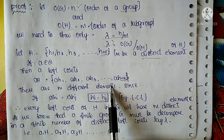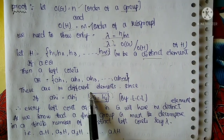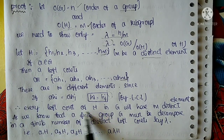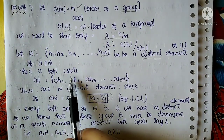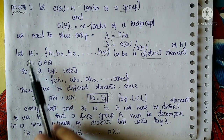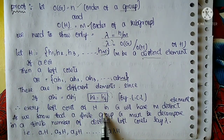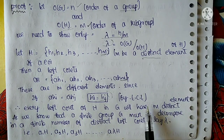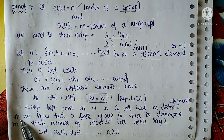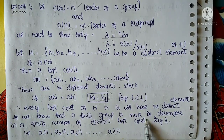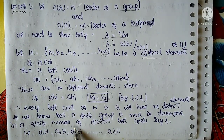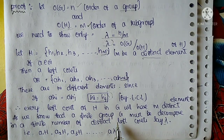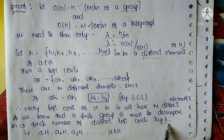Different and distinct mean the same thing here. So every left coset of H — we take a left coset AH — every left coset of H in G will have m distinct elements. As we know that a finite group G must be decomposed into a finite number of distinct left cosets, say lambda.